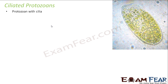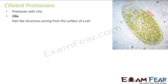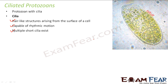Third is ciliated protozoa — protozoa with cilia. Pseudopodia were false feet or temporary extensions of cytoplasm; flagella is one single whip-like structure; cilia are small, thread-like, hair-like structures numerous in number. You can see small hair-like structures arising from the surface of a cell. They are capable of rhythmic motion, which helps in locomotion. Unlike flagella, which is one in number, cilia are many in number. They help in movement and also in engulfing food. One best example is Paramecium.